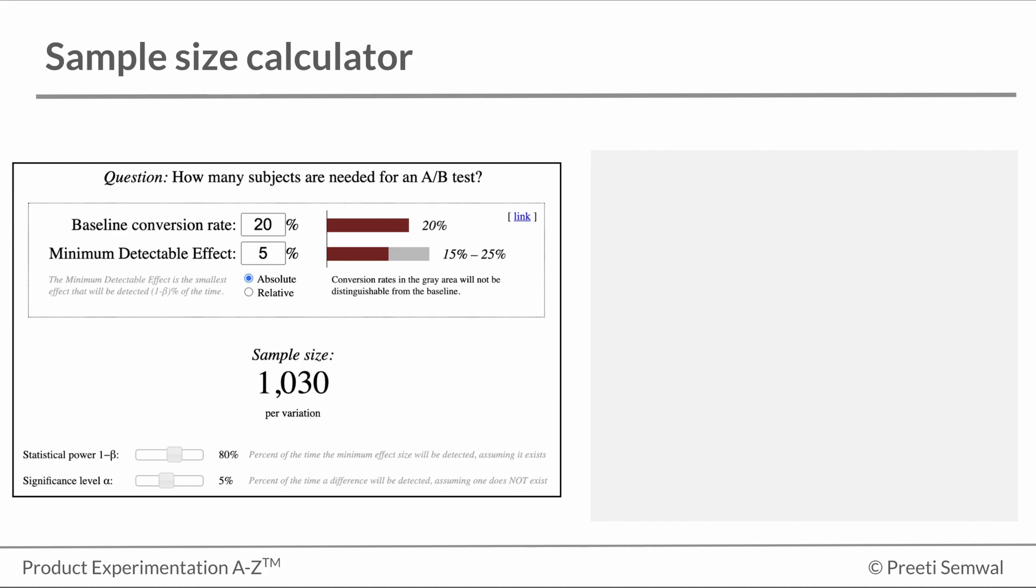For us to get to the sample size, first there are some inputs that we need. We need the baseline conversion, which is the existing conversion of your control or variation A before changes are made.